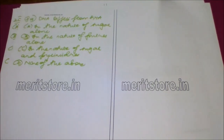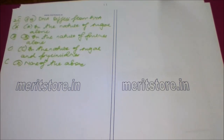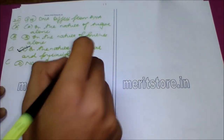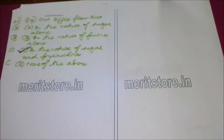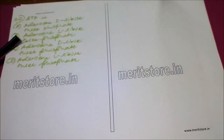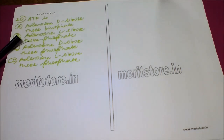Our next question is: DNA differs from RNA — Option A: in the nature of sugar alone, Option B: in the nature of purines alone, Option C: in the nature of sugar and pyrimidines, and Option D: none of the above. The correct answer is Option C, since both the sugar and the pyrimidines differ between DNA and RNA — the sugar being deoxyribose in DNA and ribose in RNA.